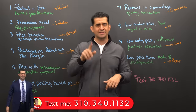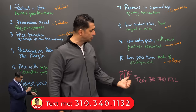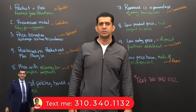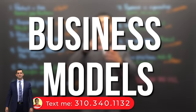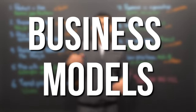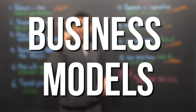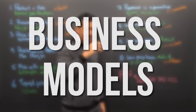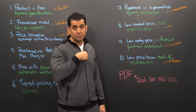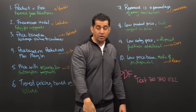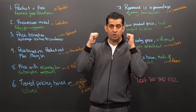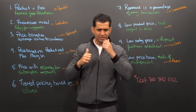If you want the PDF today, text me at 310-340-1132 and say 'business models' — we'll text you back the link to the PDF where you can print it out and see what kind of business model you want to create. If you're not in the States and still want the PDF, click on the link below in the description and subscribe to the newsletter — we'll also send you the PDF.